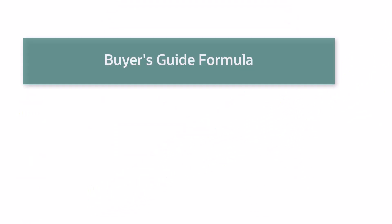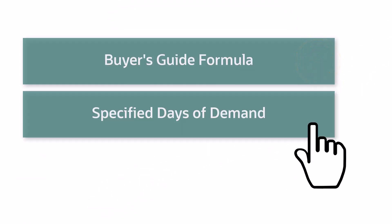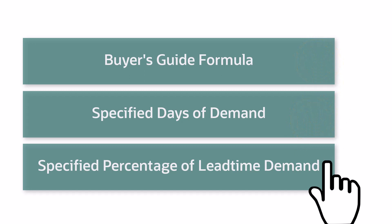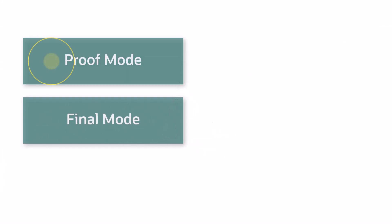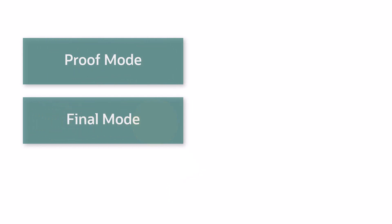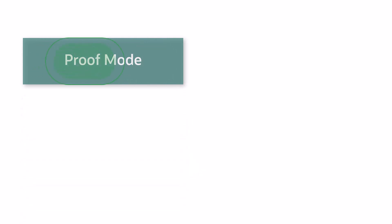This feature will provide a choice of three formulas to calculate Safety Stock values and the ability to define demand based on historic or forward-looking data. You'll also have the ability to run the program in proof or final mode. When run in proof mode, you'll be able to review and edit calculated values prior to update.